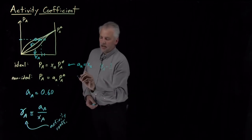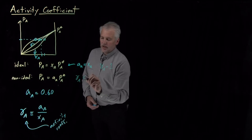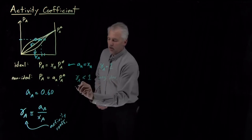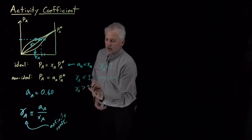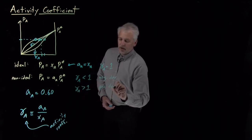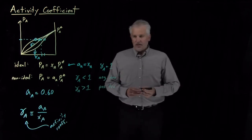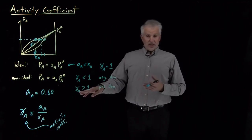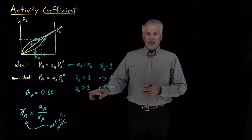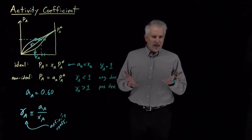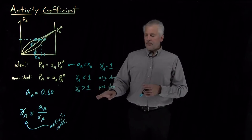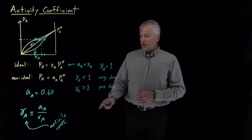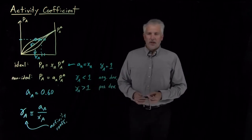In the non-ideal case, the activity coefficient is less than 1 if we exhibit negative deviations from Raoult's Law, or greater than 1 if we're exhibiting positive deviations from Raoult's Law. That's usually an easier way to think about what's going on. If I tell you the activity coefficient is 1.1, then you know immediately the activity is 10% higher than it would have been if the solution were ideal. That's a nice way to think about how non-ideal the solution is.